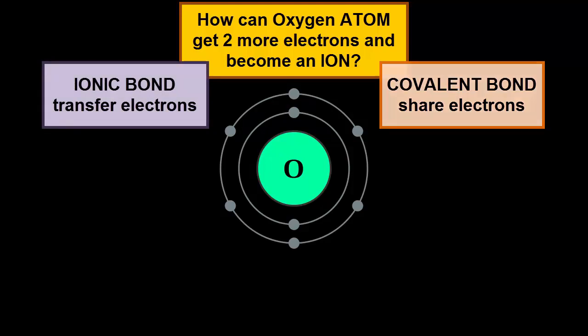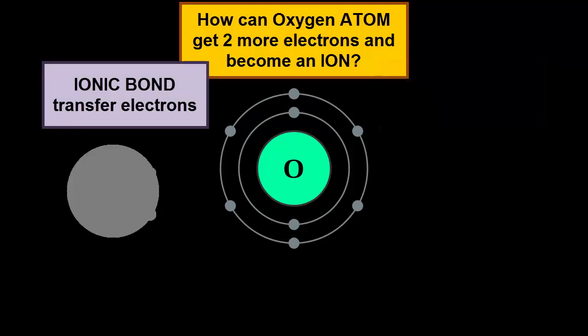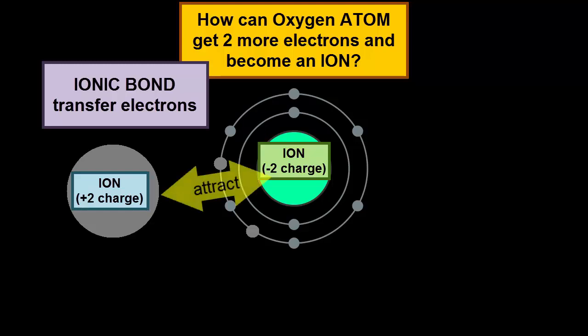Since in ionic bonds electrons are given from one atom to another, they produce two equal but oppositely charged ions. These opposite charges attract one another, forming an ionic bond. Let's look closer at the water molecule and see what kinds of bonds it has.